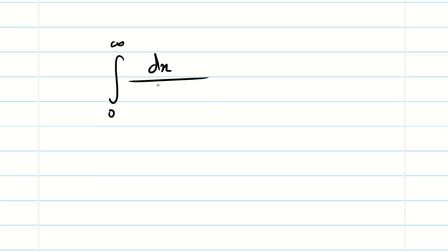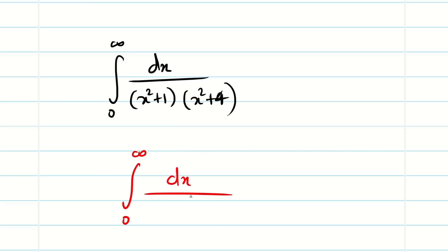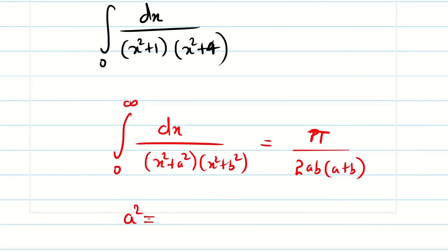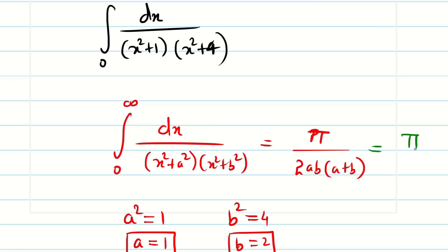Suppose in exams they ask: evaluate ∫₀^∞ dx/((x²+1)(x²+4)). Don't work with the numbers directly — you may make errors. Instead, use the general form ∫₀^∞ dx/((x²+a²)(x²+b²)) = π/(2ab(a+b)). Then set a²=1, b²=4, giving a=1, b=2. Substituting: π/(2·1·2·(1+2)) = π/(4·3) = π/12.